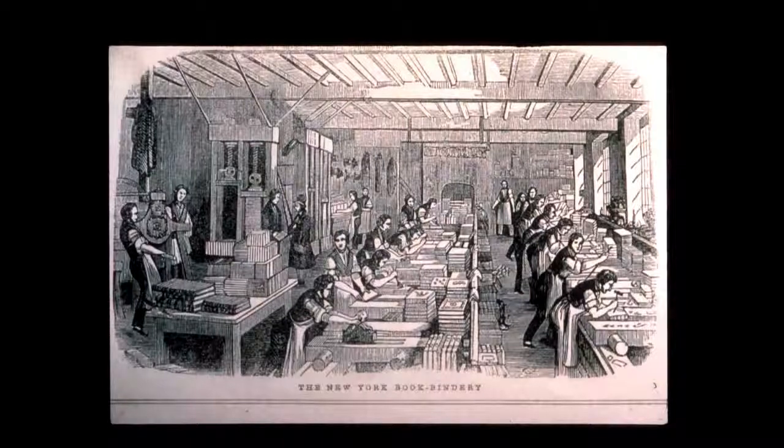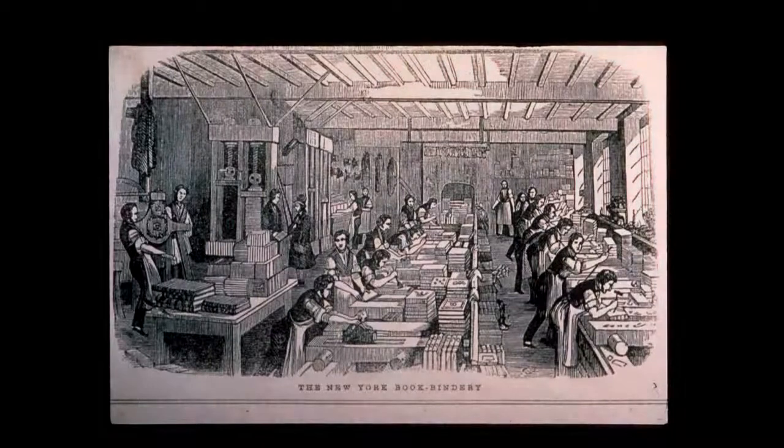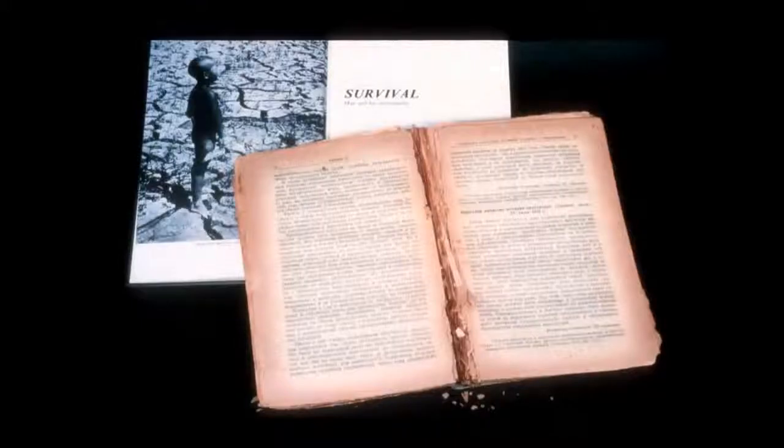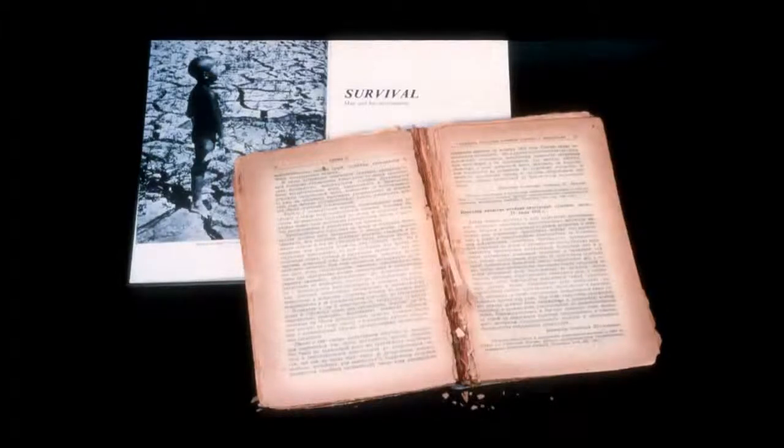As a result, both the permanence and durability of the book have declined. During the 19th century, papermakers began to use fibers and additives which introduced acid into their final product. It is the acid in paper which causes it to darken and become brittle.